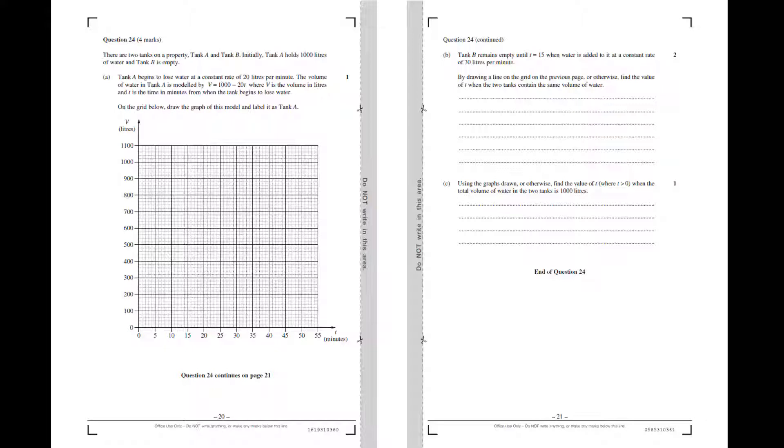The question reads: there are two tanks on a property, tank A and tank B. Initially, tank A holds 1000 liters of water and tank B is empty. Part A says tank A begins to lose water at a constant rate of 20 liters per minute. The volume of water in tank A is modeled by V = 1000 - 20T, where V is the volume in liters and T is the time in minutes. On the grid below, draw the graph of this model and label it as tank A.